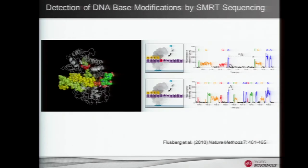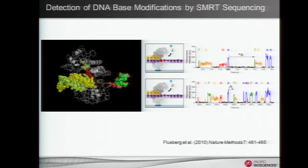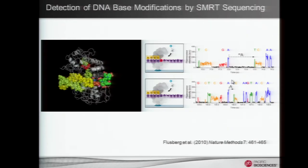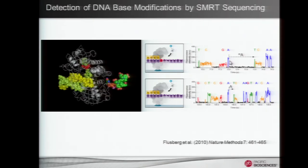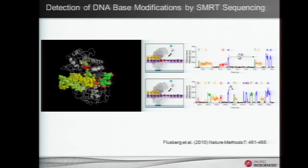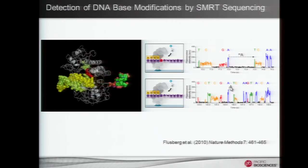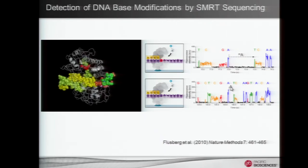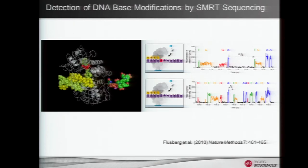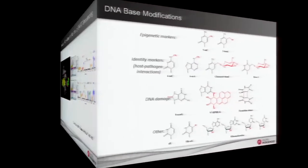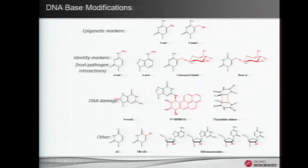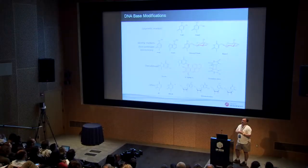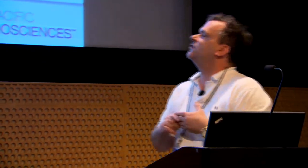Look at what happens when that enzyme encounters an A residue that's been methylated versus unmethylated. Since you're observing the molecule in real time, look at the time it takes to translocate to the next base when that A is modified versus not modified. These types of kinetic shifts in the enzyme can be systematically scored for a whole bunch of modifications — not just 5-methyl C, not just hydroxymethyl C, not just 6-methyl adenosine, but a whole range of chemical modifications, both known and unknown.